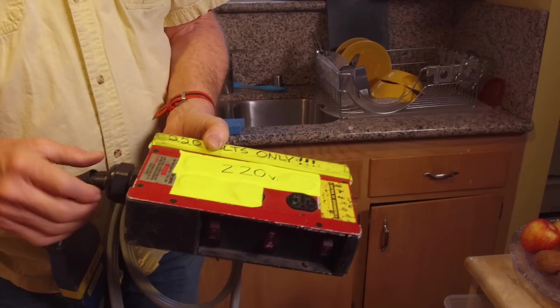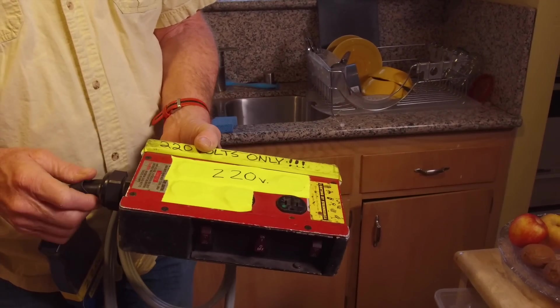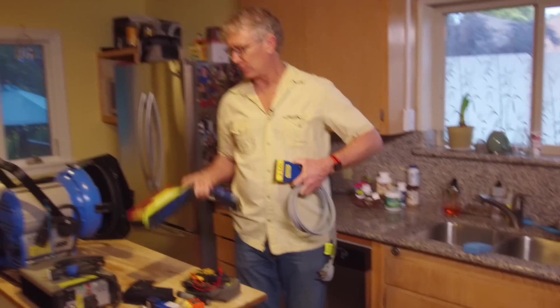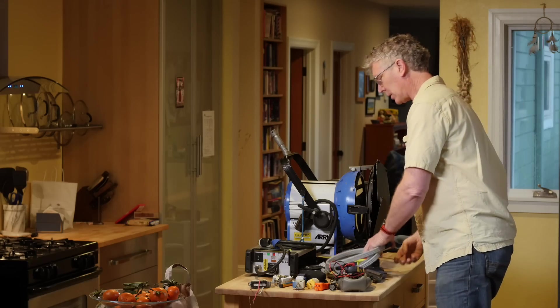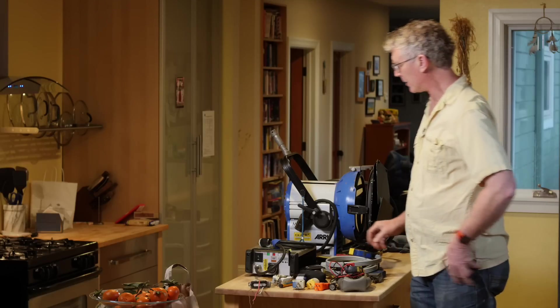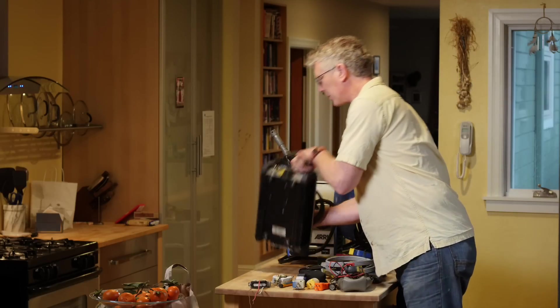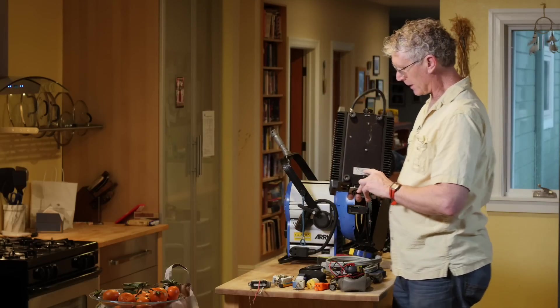So I want to be careful. I try and label it extensively so that people don't plug 110 lights in. Now, how do you know whether your ballast or light will run 220? Generally, there's a little tech spec sheet.